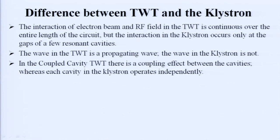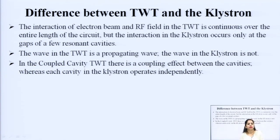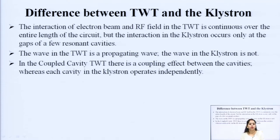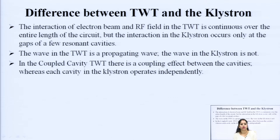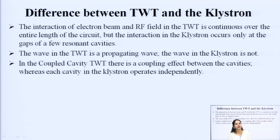Already in the last lectures, we have covered various types of microwave sources: the two-cavity klystron, reflex klystron, and the magnetron. So before proceeding towards the TWT and the BWO, you should once again revise the lectures on klystron — the two-cavity klystron, reflex klystron, and the magnetron — because the basic principles which run the TWT and BWO are also the same as covered in the last lecture.